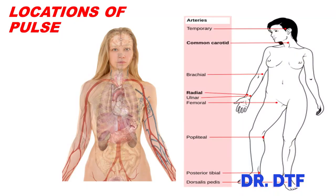There are other locations on the body where pulse can be measured very accurately: in the arm, at the elbow, at the groin, behind the knees, inside the ankle, on top of the feet, or at the temple area of the face.